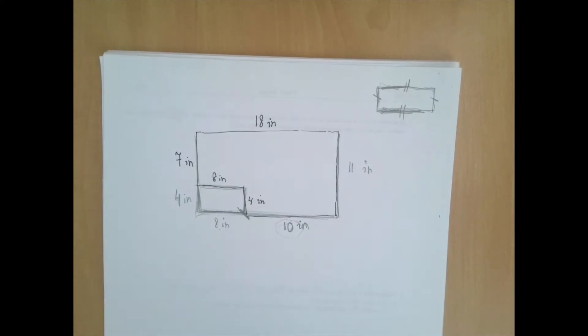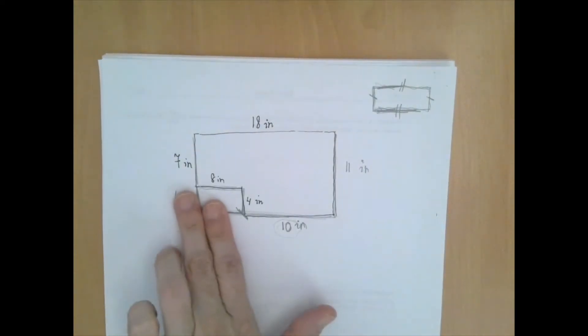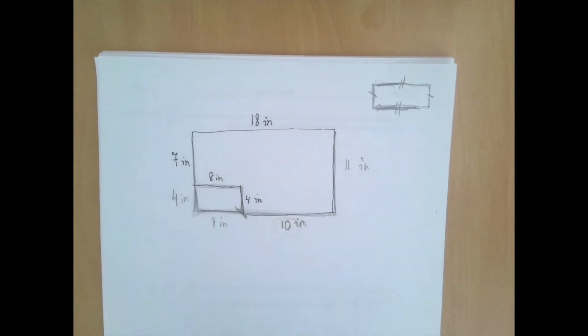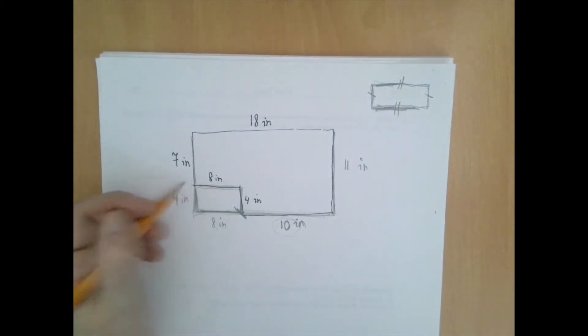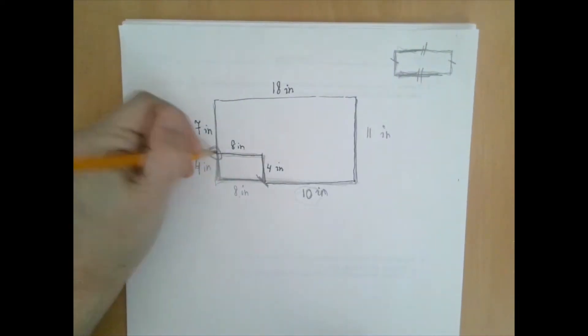And now we're ready. We should be careful not to include these two. They were just helping us to figure out these lengths. So let's pick a point and then we're going to go from there. So say we go from this corner.